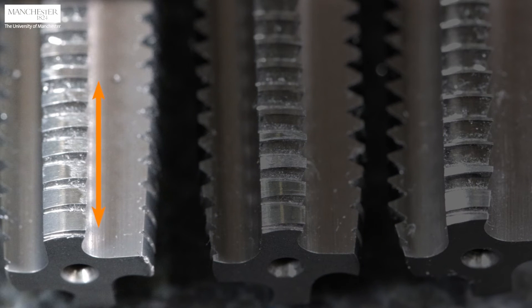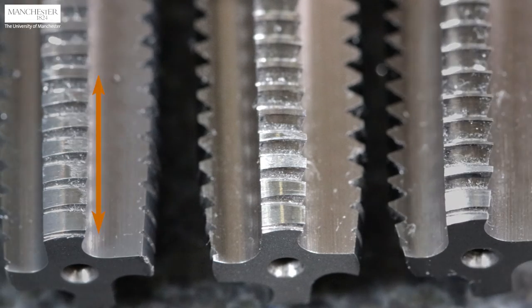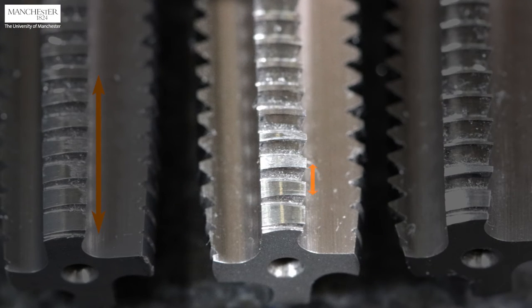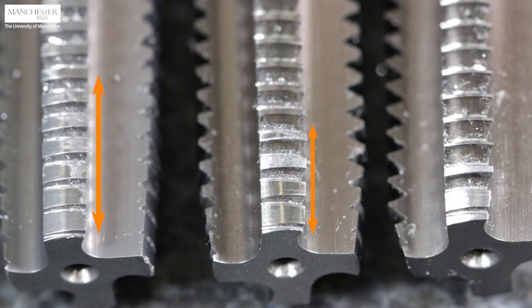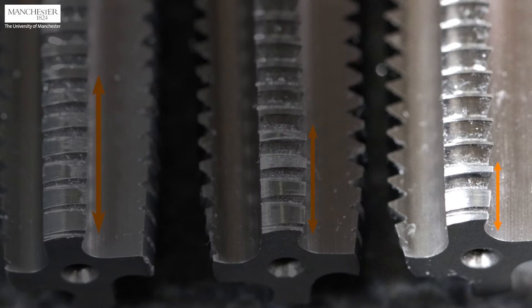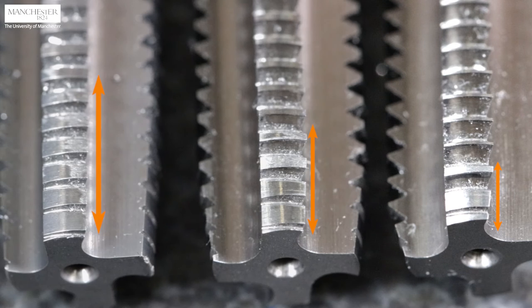Number one taper tap has the largest lead that reduces the tapping forces, hence it's used for starting the thread. Number two second tap has less lead than the taper threads, and the number three tap has very little lead with one to two threads. Therefore, the second tap is used next and the plug tap is used to finish producing the tapped hole.